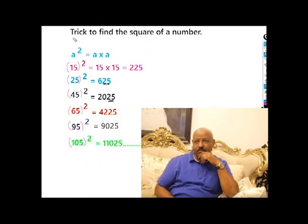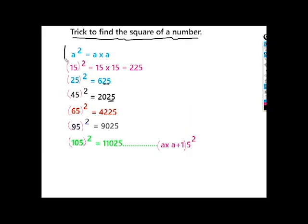The trick to find the square of a number. If you look at the square of a number, what is the trick? For example, a squared means a times a.